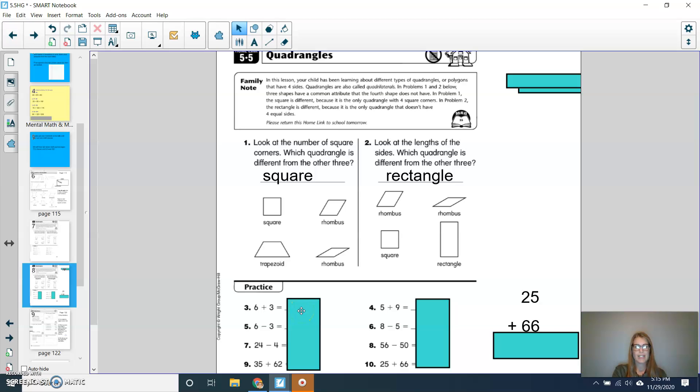All right, let's see how you did. So six plus three we know is nine, and then I'll go over to number four here. Five plus nine we know is 14. Six minus three is three. Eight minus five is also three. If I have 24 minus four, I know that that would equal 20. If I have 56 minus 50, I would have six left. For number nine, 35 plus 62. So I know that 30 plus 60 equals 90, and I know that five plus two equals seven. So 90 plus seven would give me a total of 97.